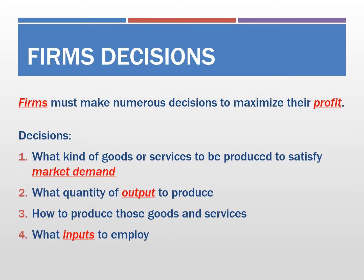Before anything, I want to briefly go over what a firm's objective is in our economy. Firms are defined in markets as the ones who supply and produce products. Firms will not supply products without a goal to achieve. Very intuitively, any firm or business in the world has only one objective, which is maximizing their profits.